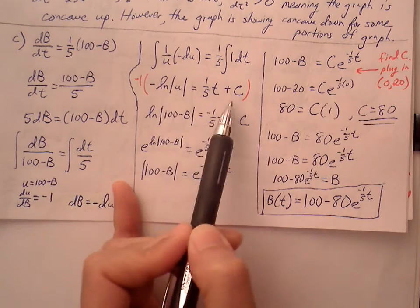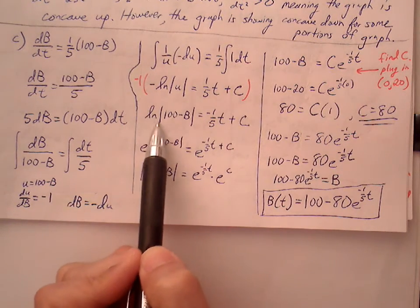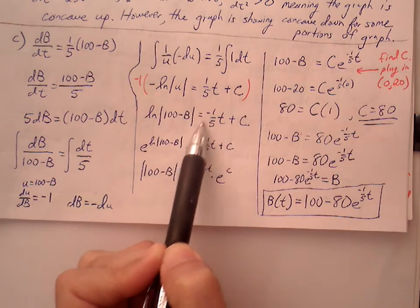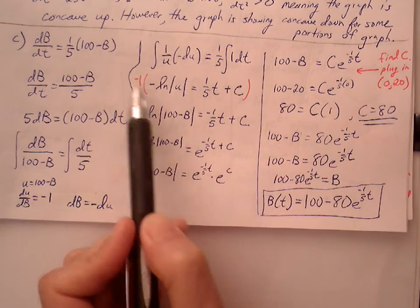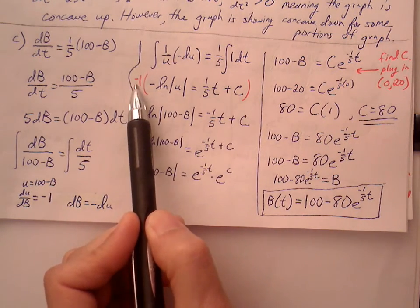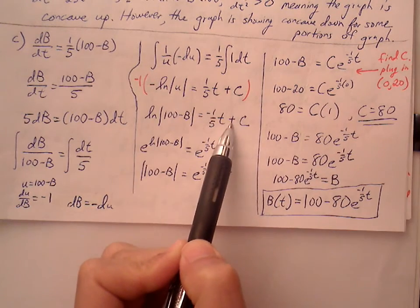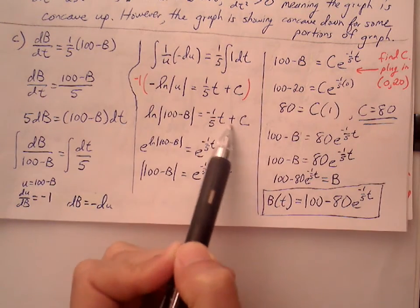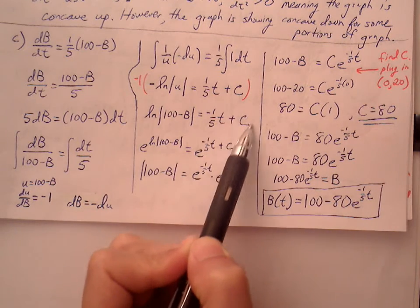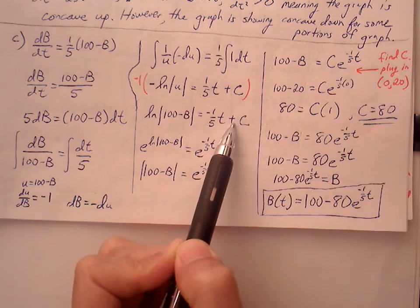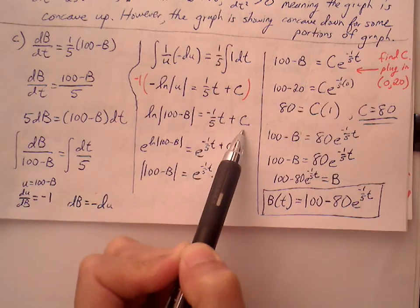Multiply everything through by negative 1, I get natural log of (100 - B) equals negative 1/5 t plus C. You may be thinking the negative 1 times positive C shouldn't that create a negative C, but we're just always going to represent it as C because C can absorb positive and negative values, so as notation we're just always going to have a plus C here.